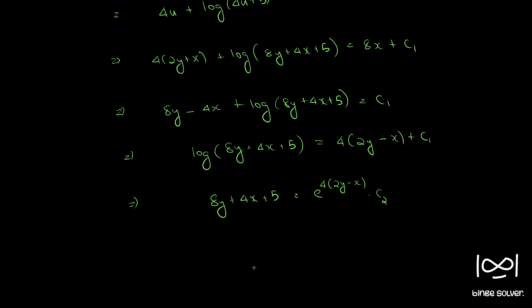Okay, there is a small mistake here. It was x minus 2y instead of 2y minus x. When we move 8y minus 4x to the other side it becomes x minus 2y.